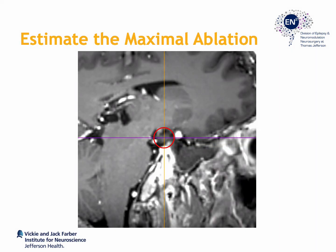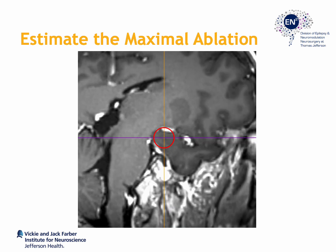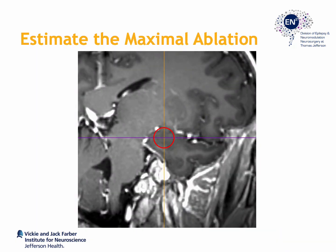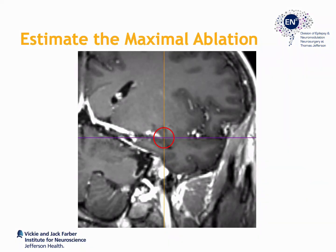I find it helpful to estimate the structures that will be ablated with this trajectory, and we can also predetermine the ablation diameter. Although the system is capable of larger ablations, for this trajectory ablations in the 10–12 mm diameter range are typically adequate. As you can see, it covers the mesial structures and the piriform cortex. We do not want to extend the ablation too far, as doing so would result in significant ablation of the temporal stem. It is also important to predetermine the ablation length, which for this trajectory is typically on the order of 15 mm.